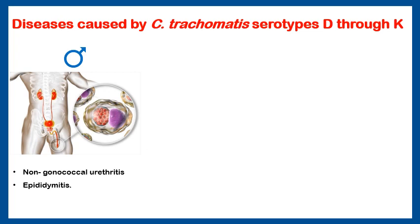Chlamydia trachomatis has 15 serotypes. Serotypes A, B, and C cause trachoma in the eye. Here we will discuss sexually transmitted infections caused by serotypes D through K. In males, these serotypes cause non-gonococcal urethritis — inflammation of the urethra — and epididymitis, which is inflammation of the epididymis.